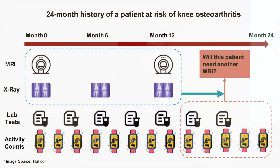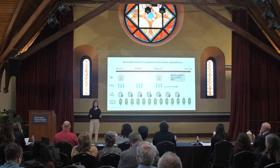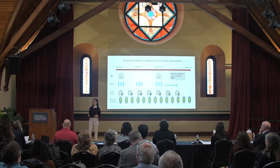To illustrate, let's come back to the example on the screen. At month 24, I only have lab tests and activity history of the past 12 months, not MRIs. However, two patients with similar activity patterns but different past MRIs should have different progressions of knee osteoarthritis. Understanding the patient-specific relationship between MRIs and activity patterns in the first 12 months will be useful in this case.